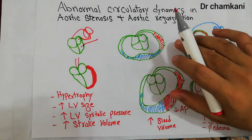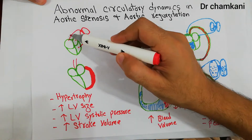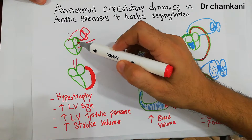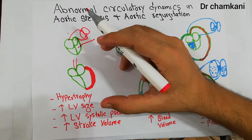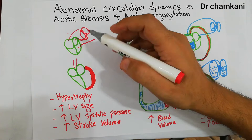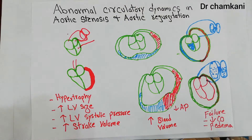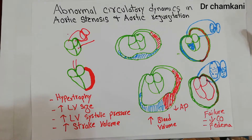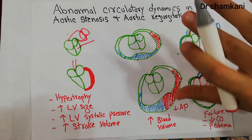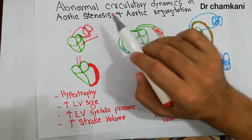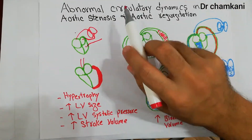Once there is stenosis or regurgitation, the heart will have some difficulty pumping blood through the stenosed valve or when there is regurgitation. Some changes will occur prominently in stenosis and some in regurgitation, but most of the time changes will occur in both. We will discuss both in the same lecture.